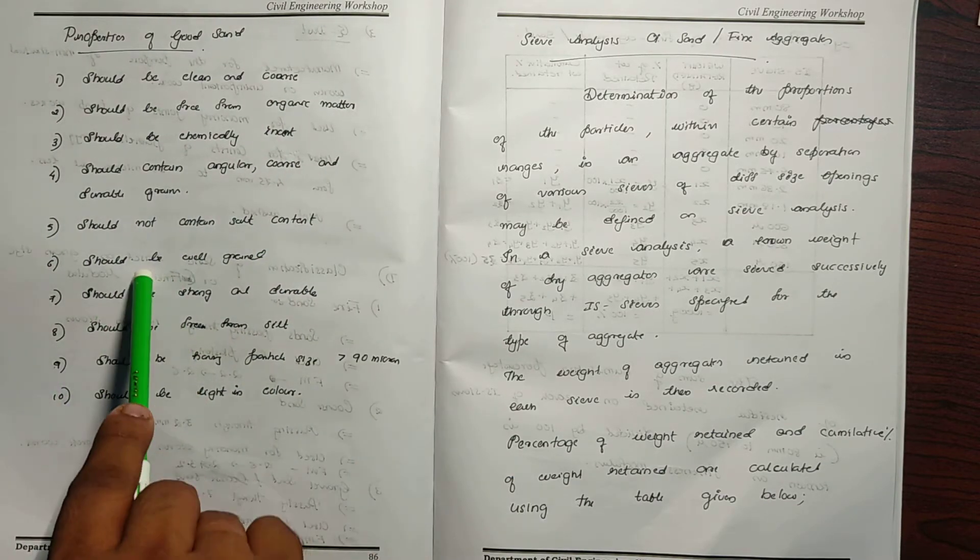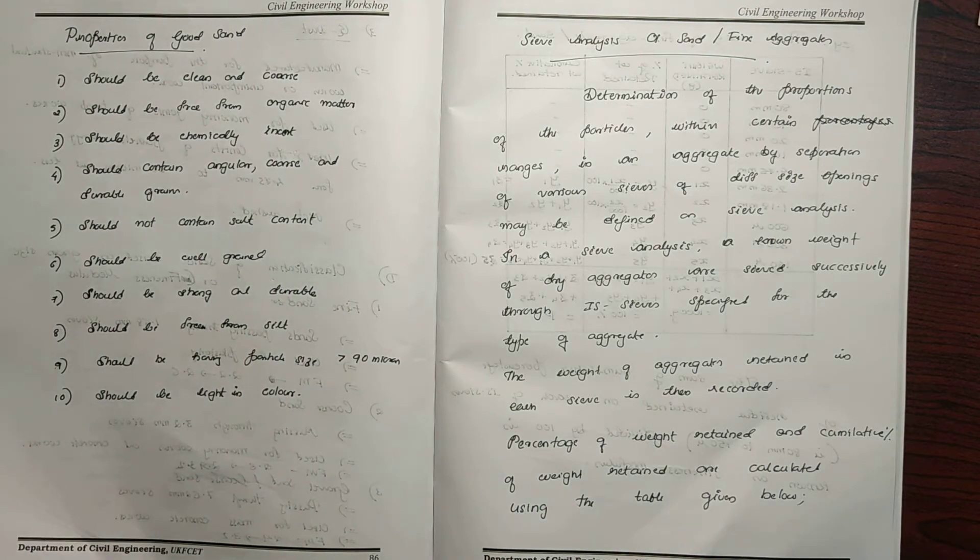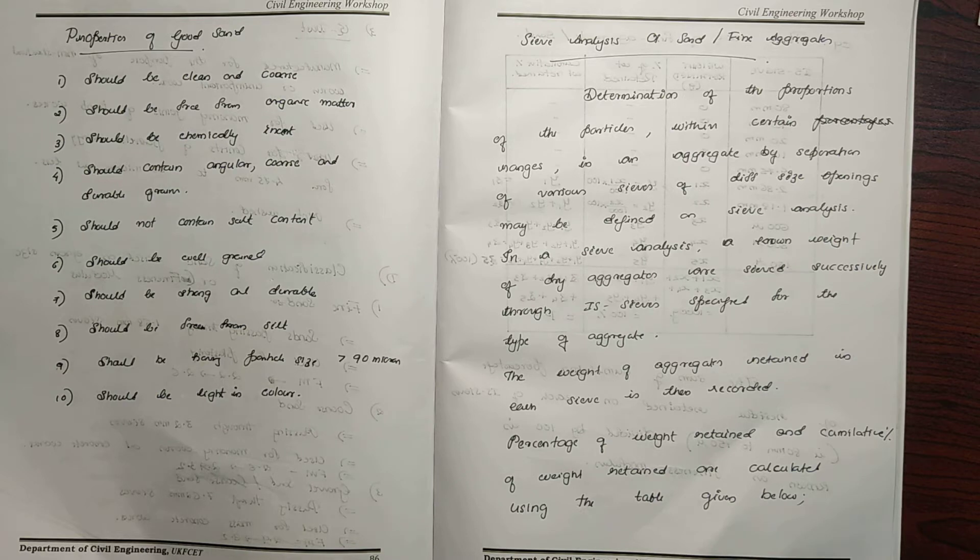Sand should be well-graded with grain size from 150 microns to 4.75 millimeters. This is the appropriate particle size.